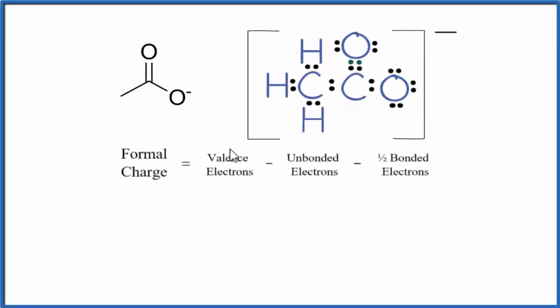To find the formal charges for each of the elements in CH3COO minus, the acetate ion, we'll use this Lewis structure here and this equation. I have two representations of the Lewis structure for the acetate ion. This one here where all the valence electrons are shown, and then this is a more structural formula. They both show the same thing. This one might be a little easier to work with as we do formal charges.